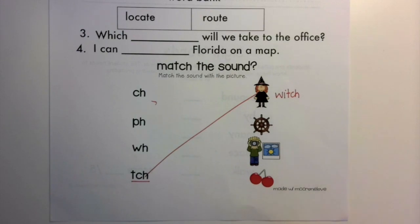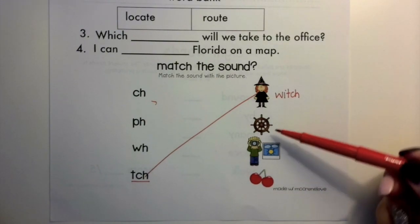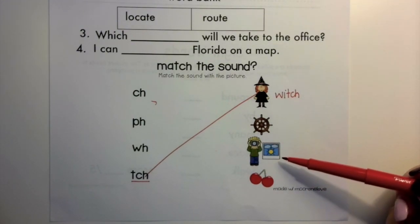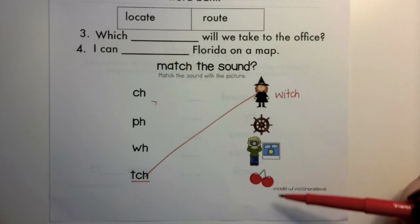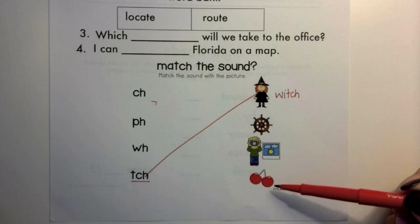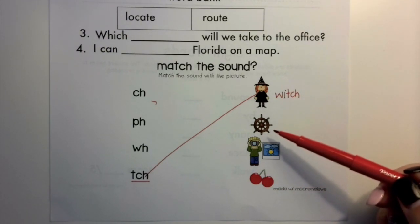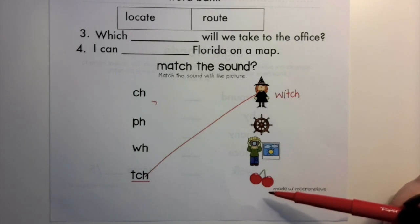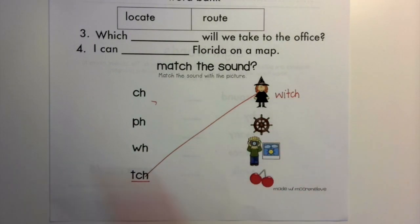Now you need to do the rest of them. This is a WH sound, this is a PH sound, and these are CH — cherries. So your three pictures are: wheel, photo, and cherries. You need to match the digraph sound with the picture.